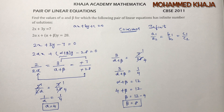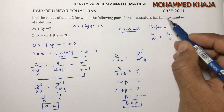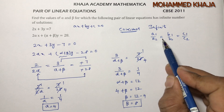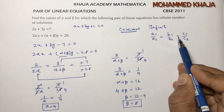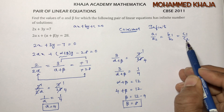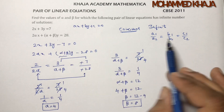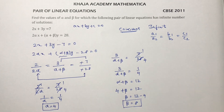So in this way we find the values of alpha and beta. For infinite solutions, the condition is a1/a2 = b1/b2 = c1/c2. Write the equations in standard form and substitute into this condition.